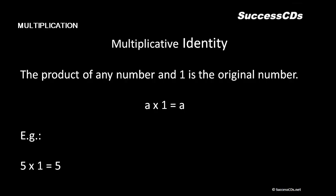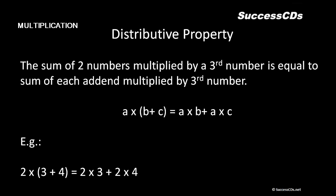Next we move forward to multiplicative identity. The multiplicative identity says the product of any number and the number one is the original number itself. That means any number a, when multiplied by one, gives the number a itself. For example, five into one is always going to remain five.